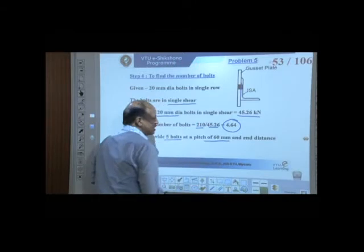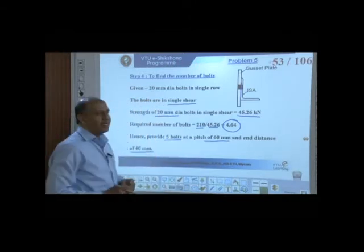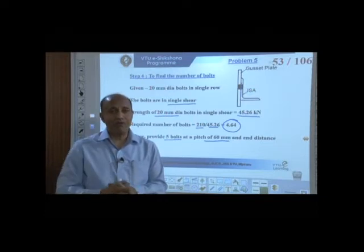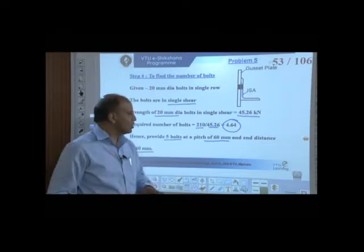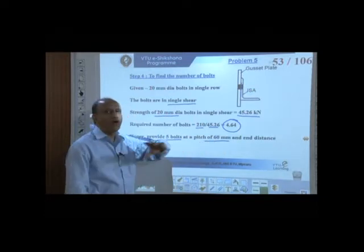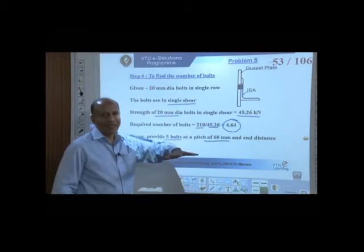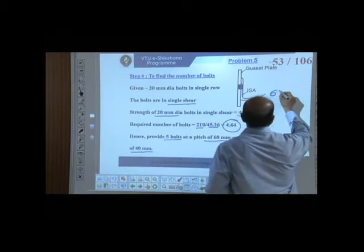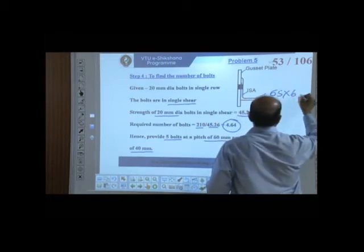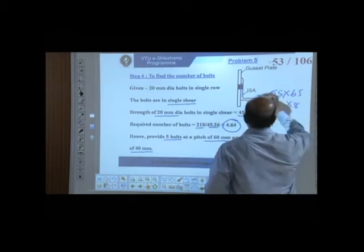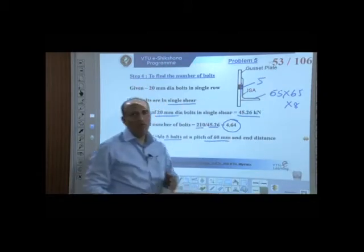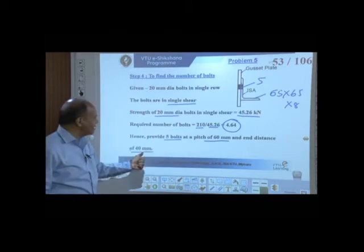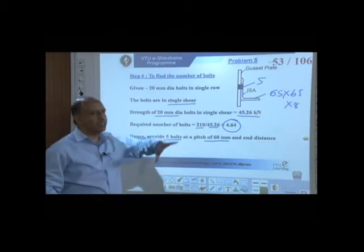We assume a pitch of 60 mm and end distance of 40 mm — appropriate clause 10.12. So the connection design is complete: angle is 65×65×8, with 5 bolts placed one behind the other with pitch 60 mm and end distance 40 mm.